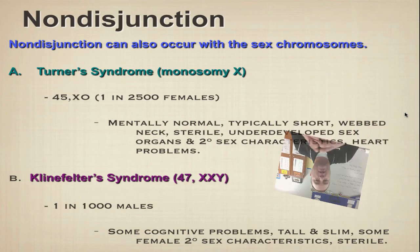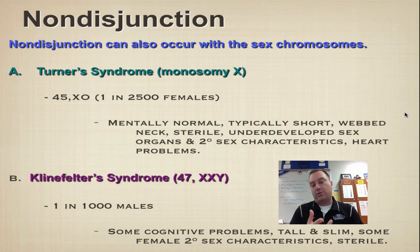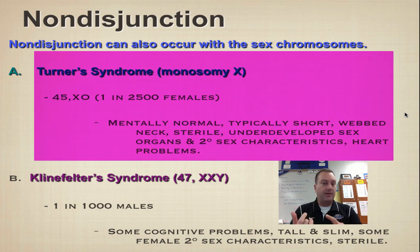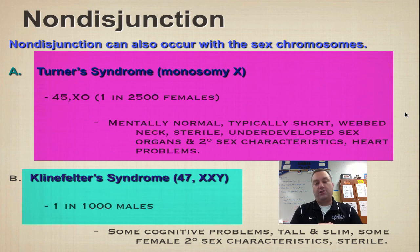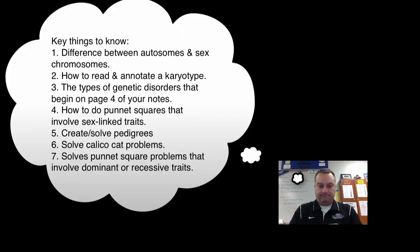Non-disjunction is when chromosomes do not separate correctly during meiosis. It can occur in autosomes or sex chromosomes. When it occurs in autosomes, you get things like Down syndrome, Edwards syndrome, and Patau syndrome. Down syndrome is trisomy 21 — you have an extra chromosome 21. When non-disjunction occurs in sex chromosomes, you either get Turner syndrome, which is monosomy X — you're 45XO with only one sex chromosome — or Klinefelter syndrome, in which you're 47XXY, having either an extra X or an extra Y.